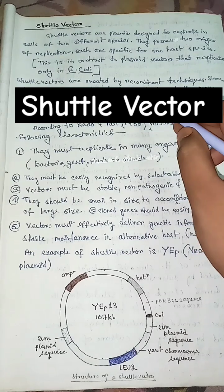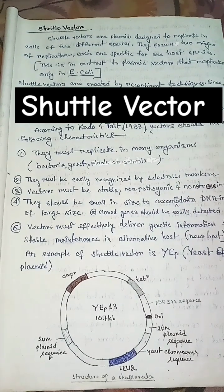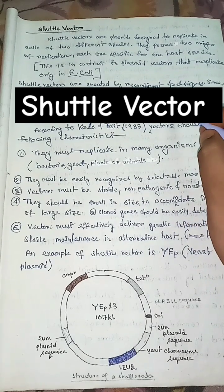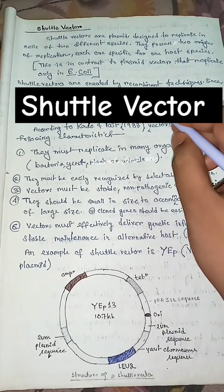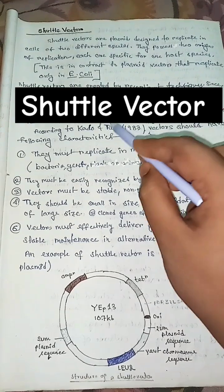Shuttle vectors are created by recombinant techniques. Since these vectors can propagate in one host and then move into another without any extra manipulation, they are called shuttle vectors.